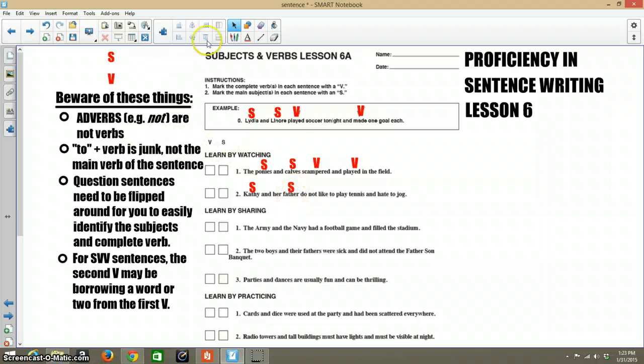Now, the word 'not' is an adverb. It's not a verb. So this is a multi-word verb. 'Do like' is the verb. Why I'm in purple, I don't know. From the last video, I think. There's the first verb, 'do like.' Kathy and her father do like. And then 'to play tennis.' It says over here, 'to' plus a verb is junk, not the main verb of a sentence. So you can always cross that out. But you need to be careful. Once you see the word 'and,' that could be another verb for the sentence. So I'm just going to eliminate the junk up to that point.